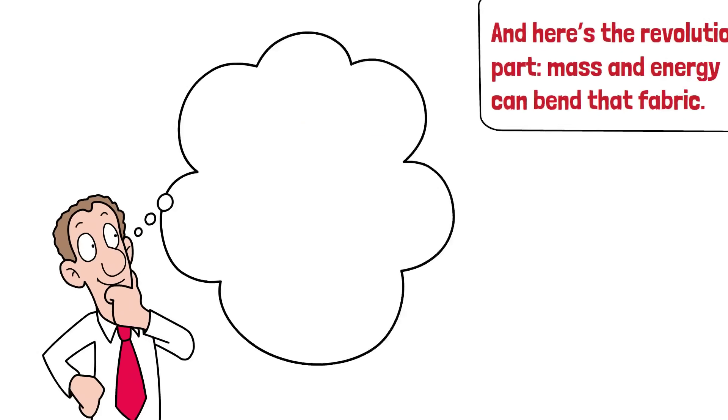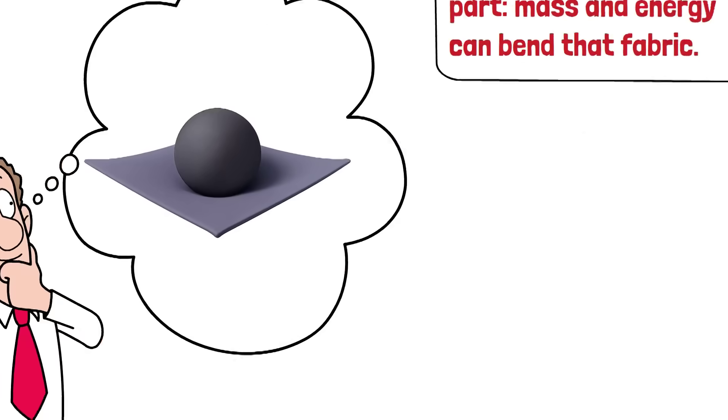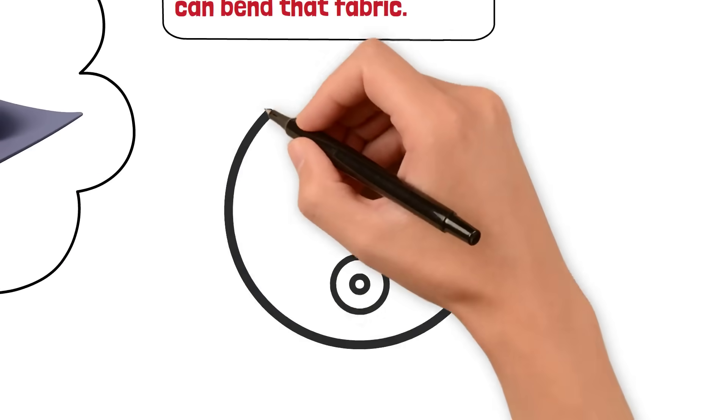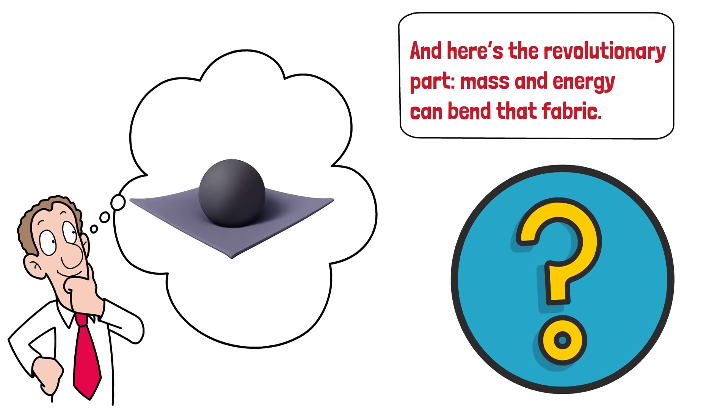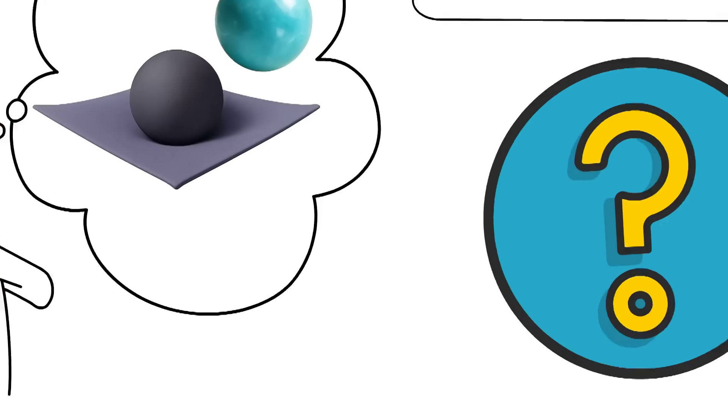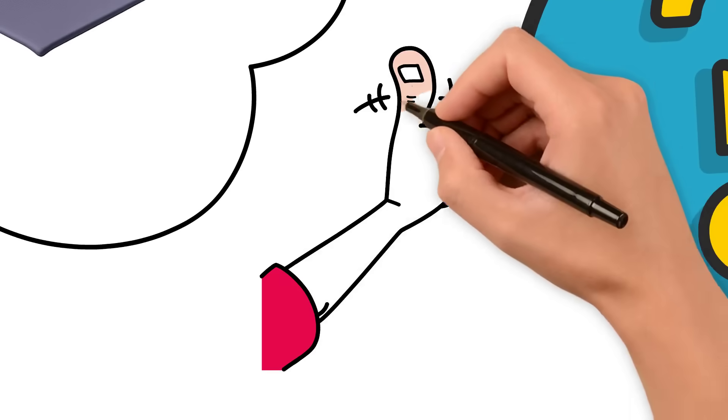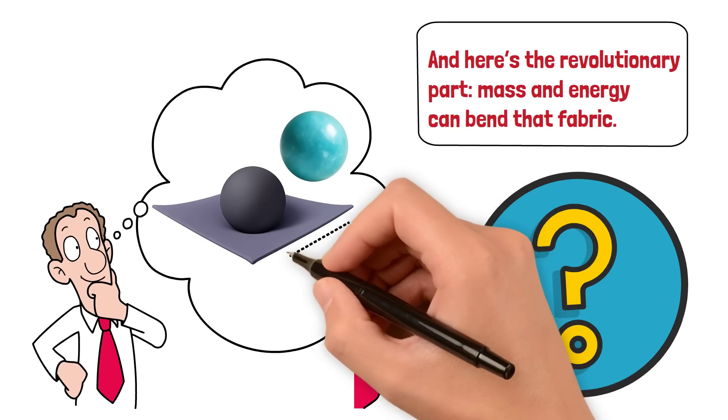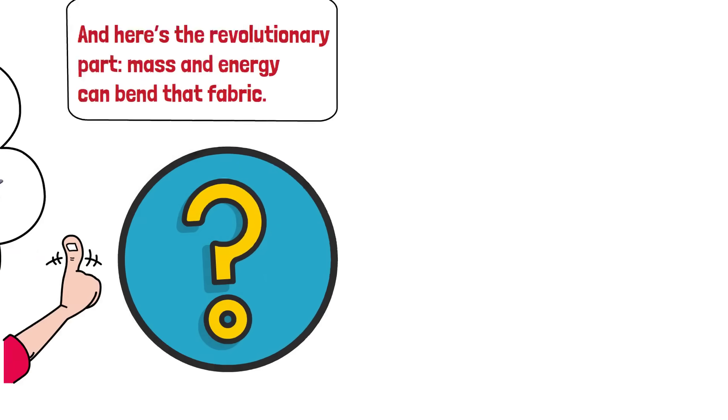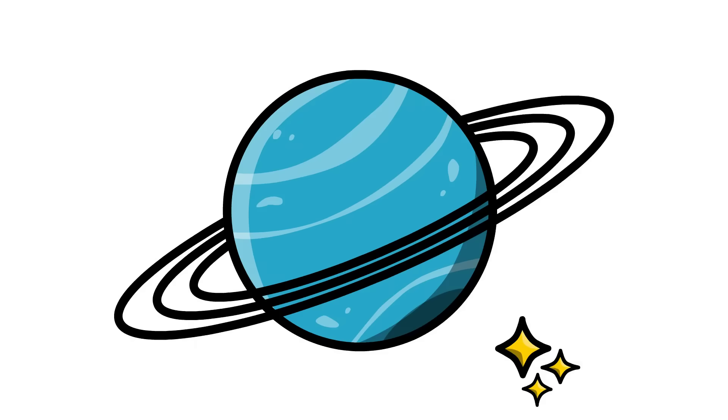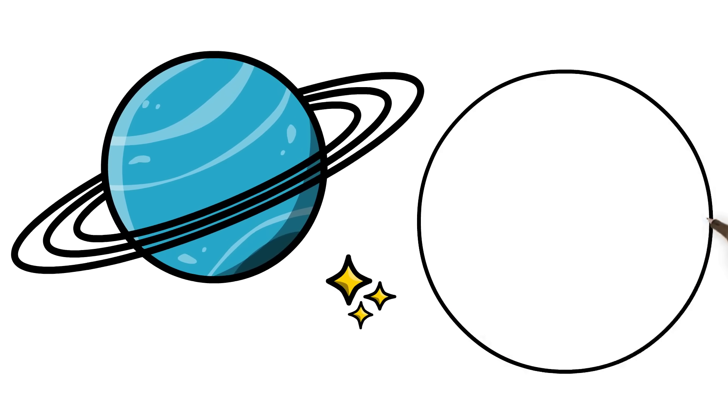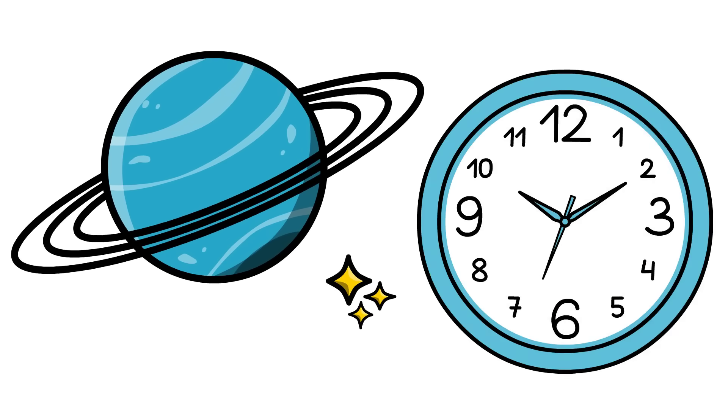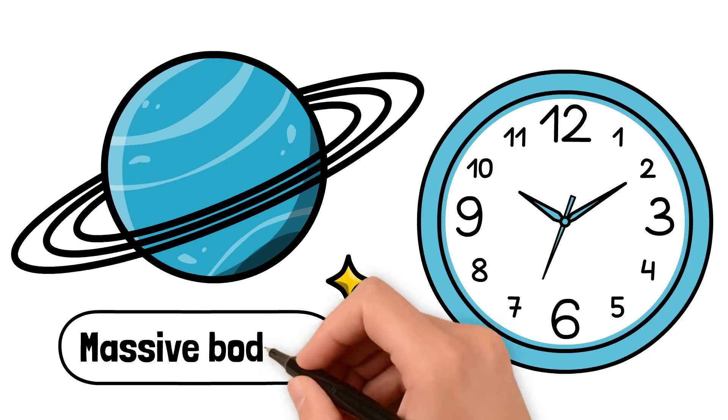Imagine placing a heavy ball on a stretched rubber sheet. The sheet curves around the ball, right? Now, if you roll a smaller marble nearby, it naturally moves around the heavier ball, not because there's an invisible force pulling it, but because it's following the curved surface. That's gravity. Planets orbit stars not because they're being pulled, but because they're moving along the curves of space-time created by massive bodies.